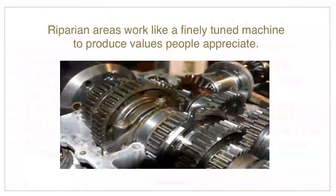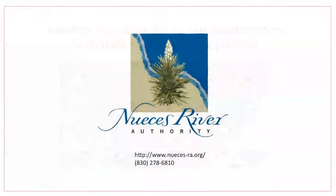Riparian areas work like a fine-tuned machine. If one part of the machine is damaged or broken, the machine won't work quite right, and the production of values is impaired. In Lesson 4, you will learn about how riparian areas work and how to tell if they are functioning properly. We hope you enjoyed Lesson 3 of the Remarkable Riparian Short Course, brought to you by the Noesis River Authority, with funding from the Dixon Water Foundation.